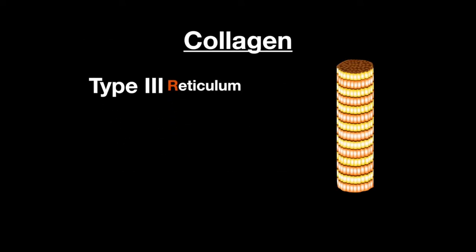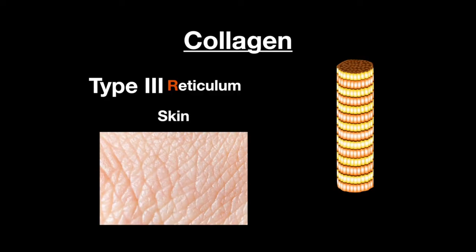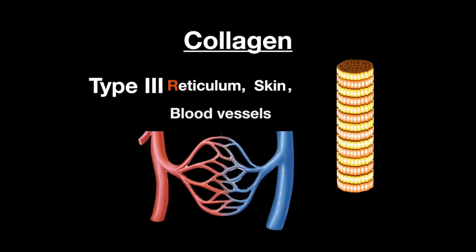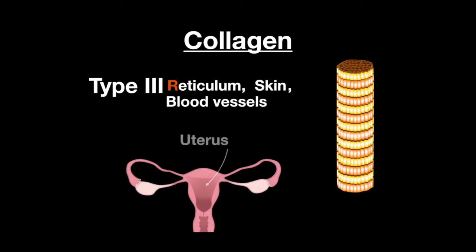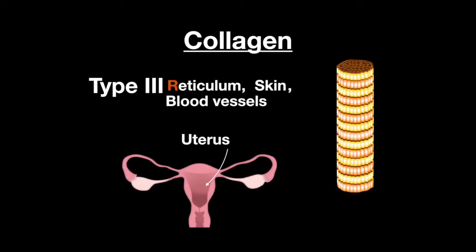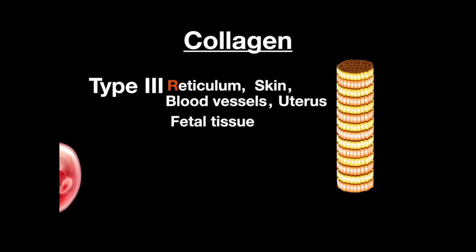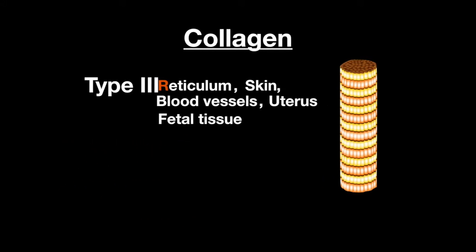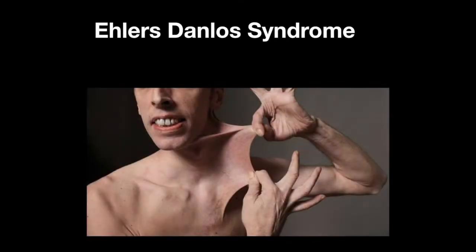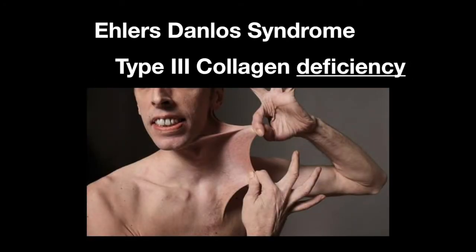Type 3 composes the reticulum, which includes the skin, blood vessels, uterus, and fetal tissue. In the uncommon vascular type of Ehlers-Danlos syndrome, type 3 collagen is deficient.